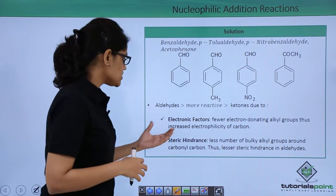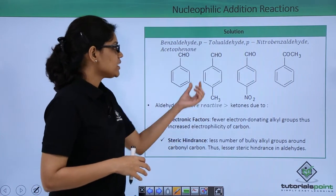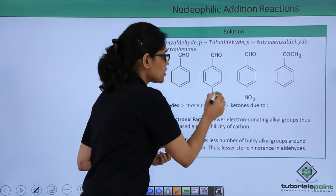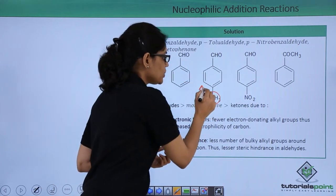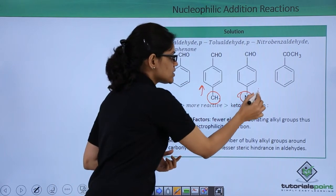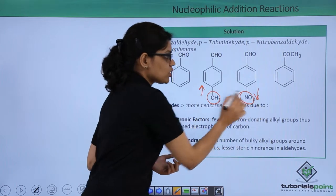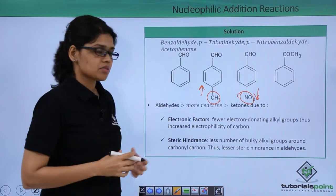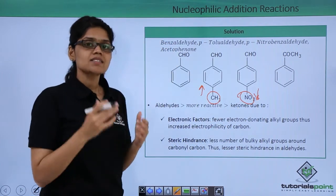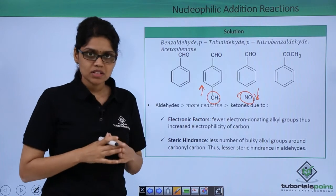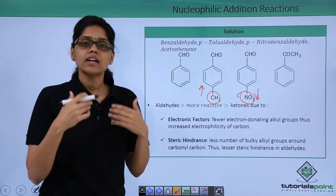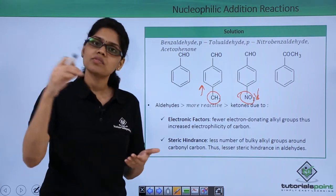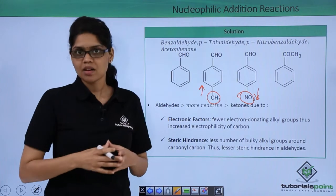Based on that, you can easily see that here we have benzaldehyde, here we have an electron donating group attached, and here we have nitro, which is an electron withdrawing group. The second factor is steric hindrance — with fewer bulky groups attached to C=O, it is easier for the nucleophile to attack the carbonyl carbon.